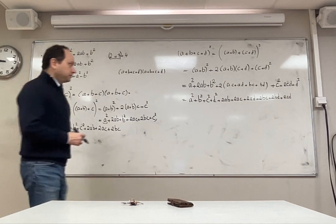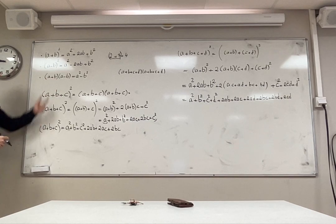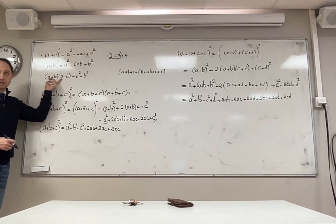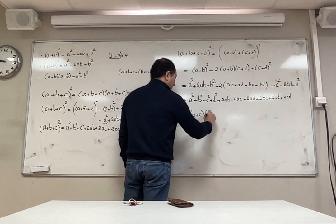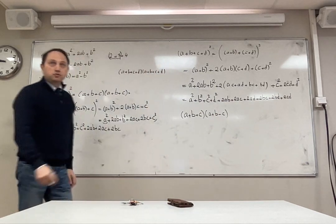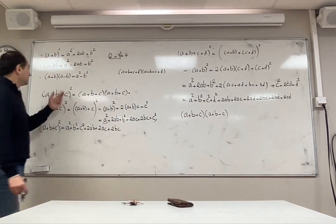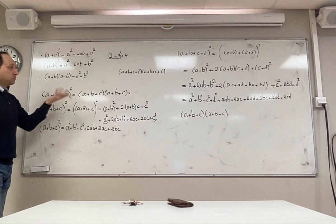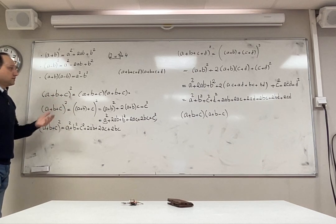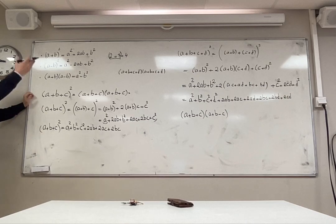Don't think these formulas only work for two numbers. The pattern is important. For example, can I use the conjugate rule to solve a product like a plus b plus c times a plus b minus c? In the beginning you might say no, because the conjugate pattern requires two numbers added and the same two numbers subtracted. Here I have three numbers, so it is not exactly that pattern.